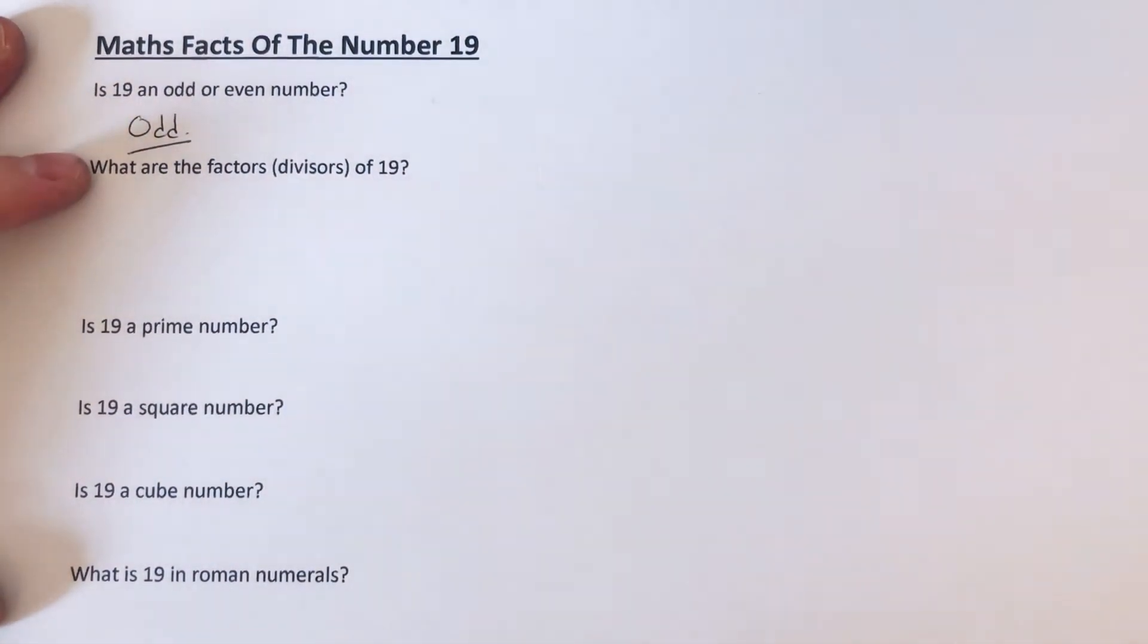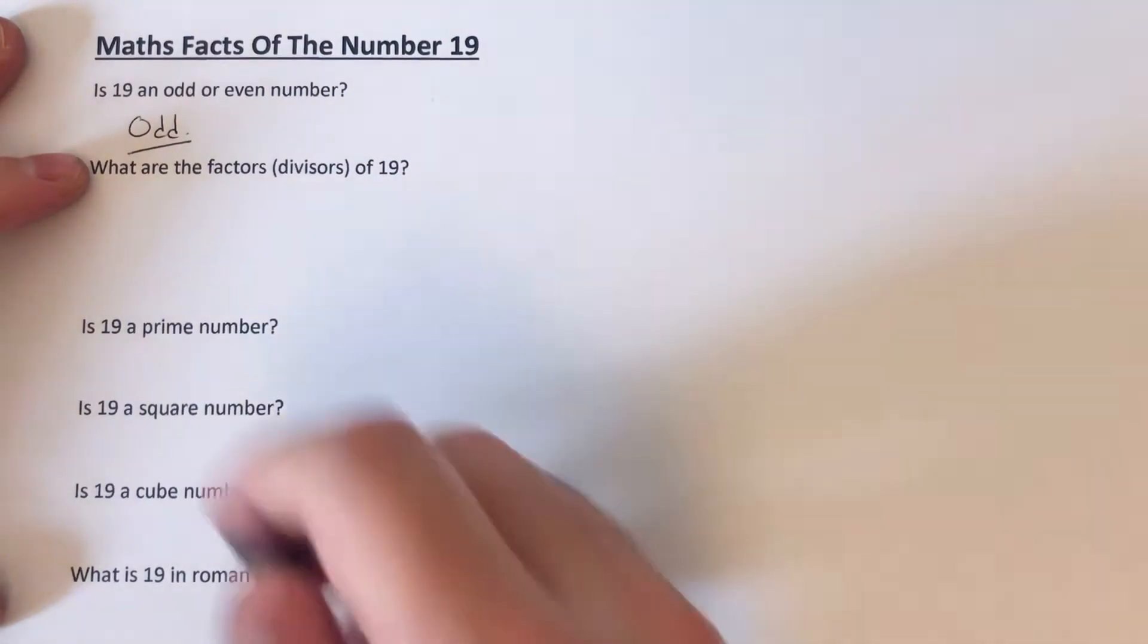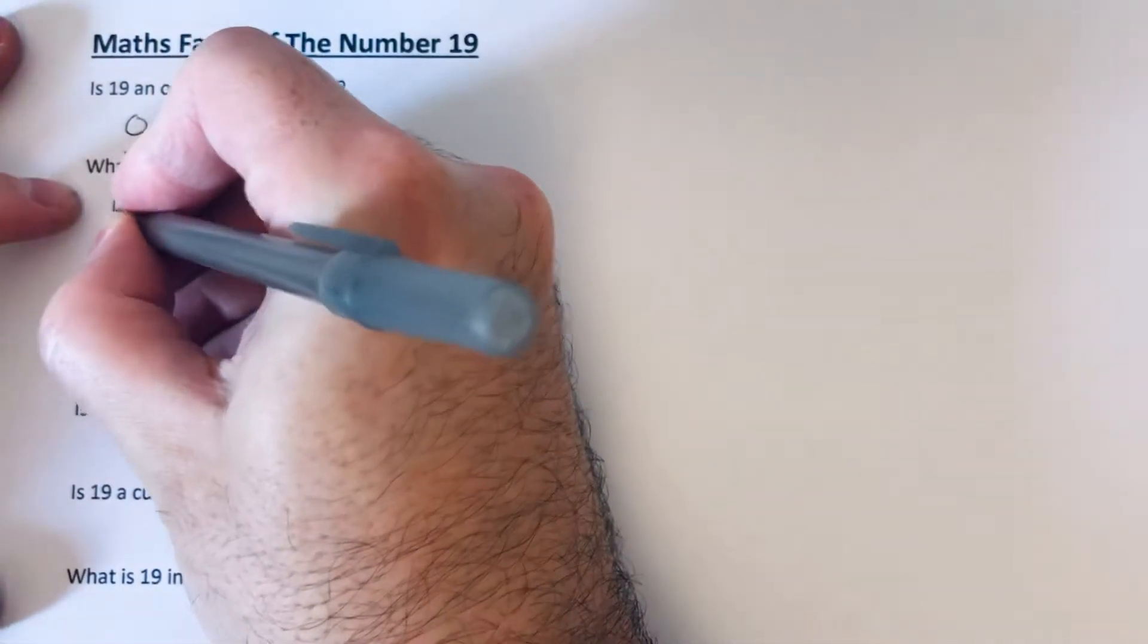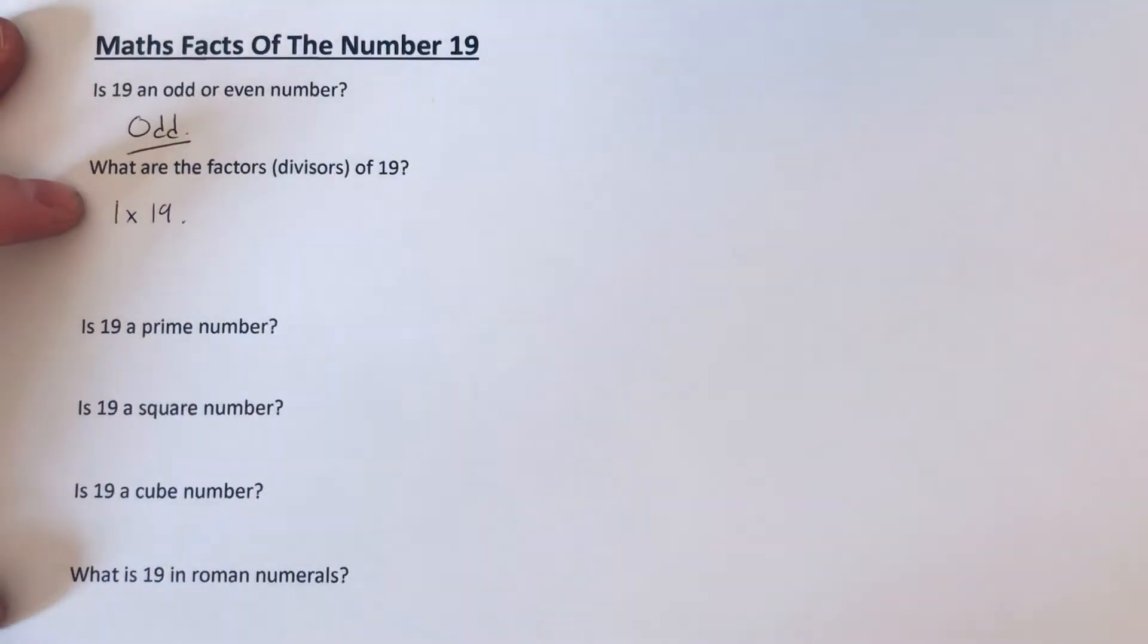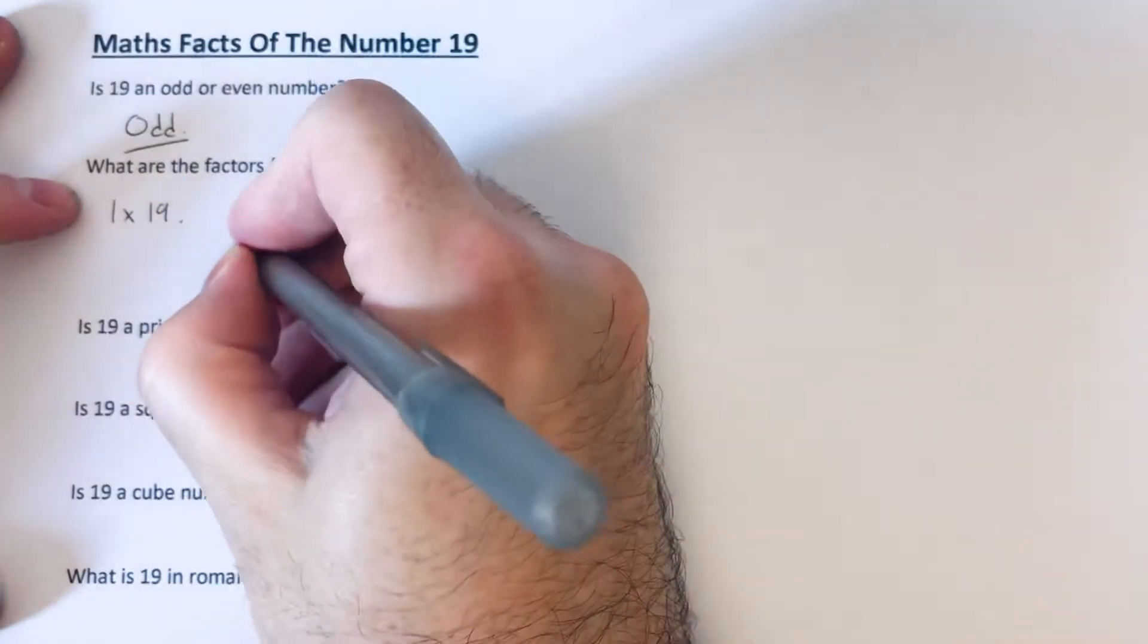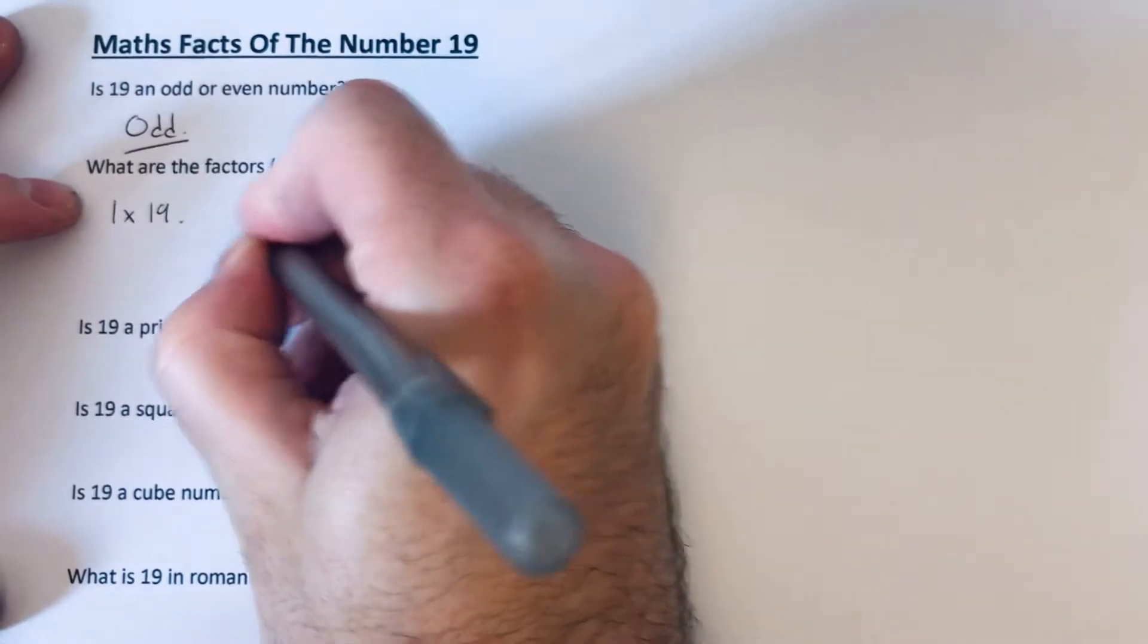So what are the factors of 19? So if we start with the 1s, we have 1 times 19. And then that's all we've got then. So the only two factors are 1 and 19.